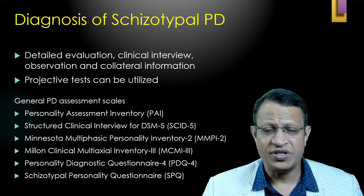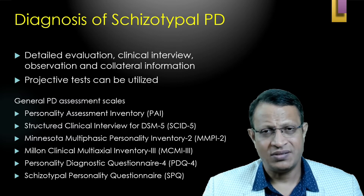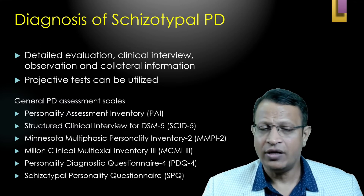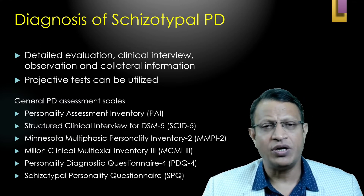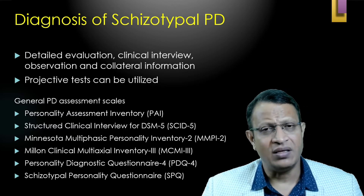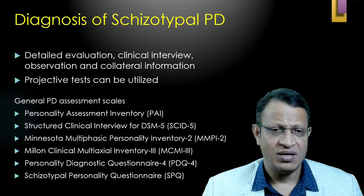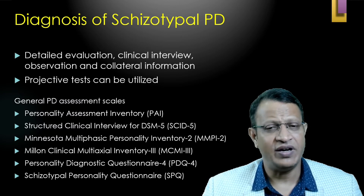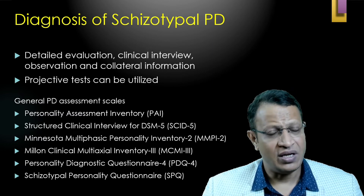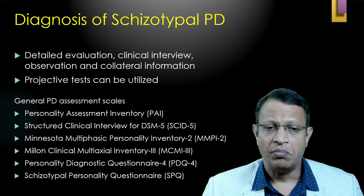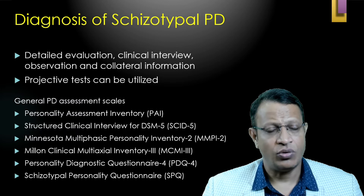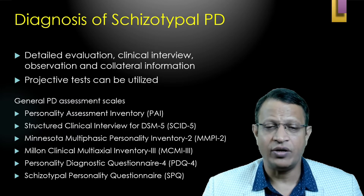Diagnosis of schizotypal PD is made by a clinician through a thorough clinical interview, detailed evaluation, observation, and collecting information from multiple sources such as parents, siblings, friends, relatives, and colleagues. Projective tests can also be used. Various personality disorder scales can be utilized, such as the Personality Assessment Inventory, SCID, Minnesota Multiphasic Personality Inventory-2, Millon Clinical Multiaxial Inventory-2 and 3, Personality Diagnostic Questionnaire-4, and the Schizotypal Personality Questionnaire.